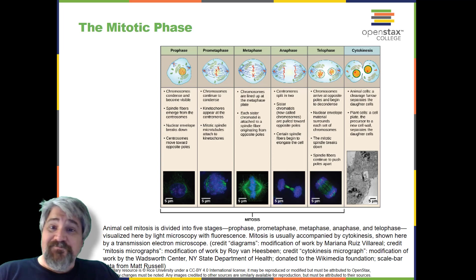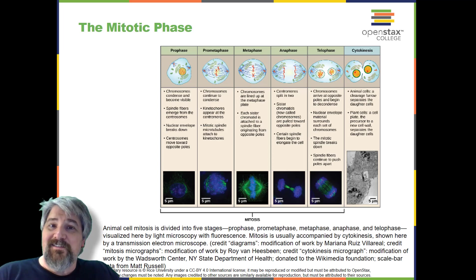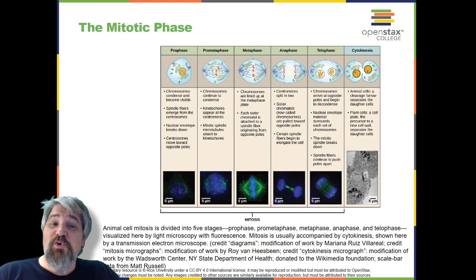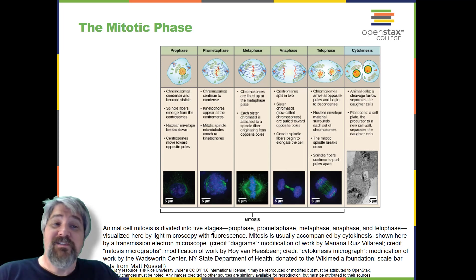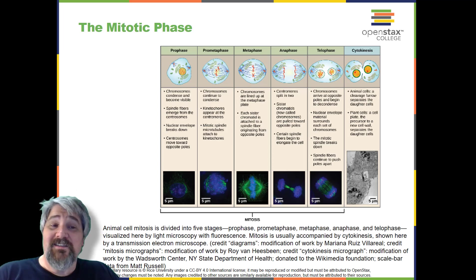The mitotic phase. To make two daughter cells, the contents of the nucleus and the cytoplasm must be divided. The mitotic phase is a multi-step process during which the duplicated chromosomes are aligned, separated, and moved to opposite poles of the cell, and then the cell is divided into two new identical daughter cells. The first portion of the mitotic phase, mitosis, is composed of five stages which accomplish nuclear division. The second portion, called cytokinesis, is the physical separation of the cytoplasmic components into two daughter cells.